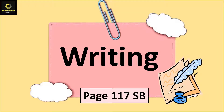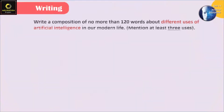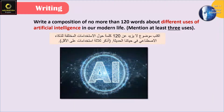Writing. Page 117. Write a composition of no more than 120 words about different uses of artificial intelligence in our modern life. Mention at least three uses.